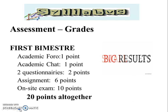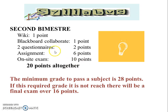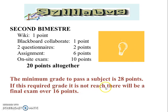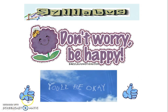The second semester follows the same evaluation structure. There is a weekly activity, Blackboard questionnaire, assignment, and on-site exam. The minimum rating to pass the subject is 28 points. If this required grade is not reached, there will be a final exam worth up to 60 points.